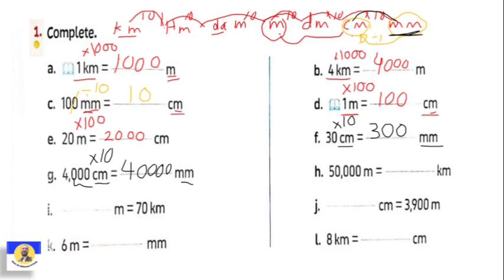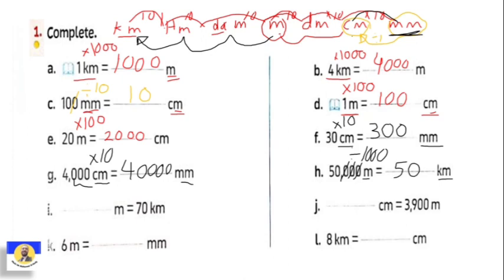Letter h: fifty thousand meters equal how many kilometers? From meter to kilometer, we go back one, two, three steps. Going back means we divide. Three steps means divide by one thousand — cancel three zeros. So the answer is fifty kilometers. Summary: divide means cancel zeros; multiply means add extra zeros.